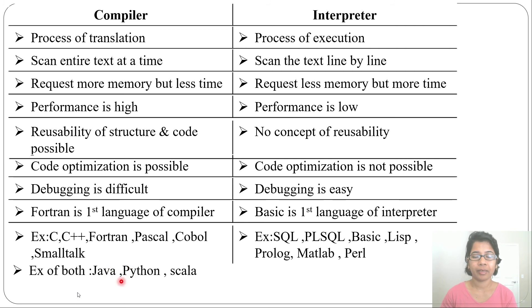Some languages use both compiler and interpreter, like Java and Python. In the case of Java, the compiler converts to bytecode, then the interpreter runs that bytecode and produces output. So these are some basic differences between compiler and interpreter. In the next lecture, I'll discuss phases of compiler. Thank you.